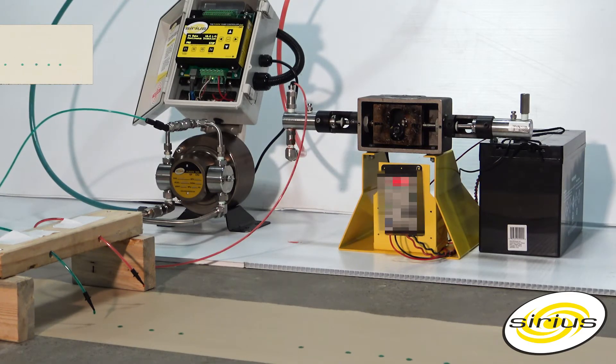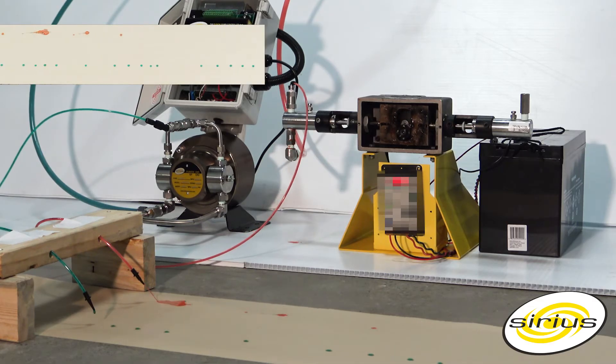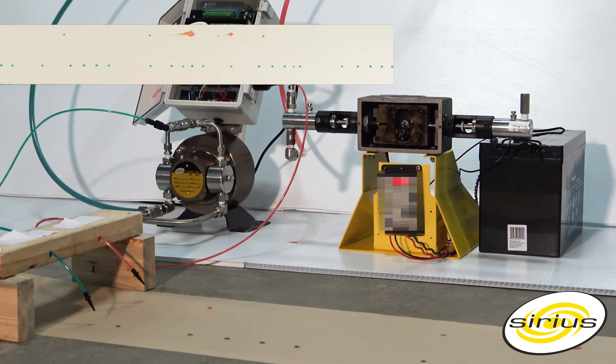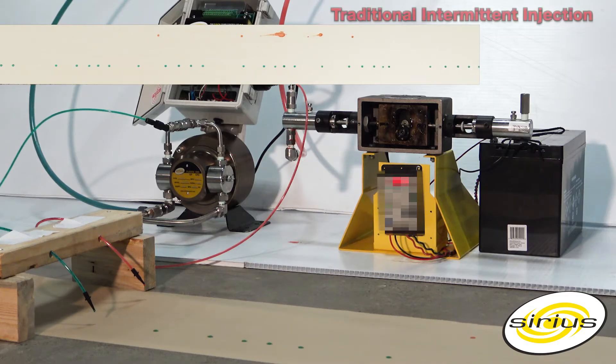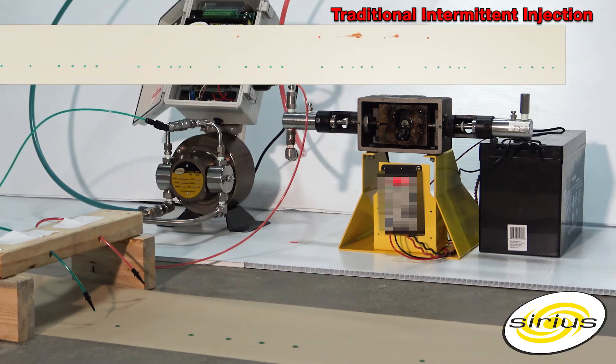Scrolling across the top is the second camera angle showing the top view of the process. Traditionally, higher volume pumps with timers have been used to provide intermittent injection. A typical intermittent pump is shown on the right injecting red dye at 10 quarts per day.